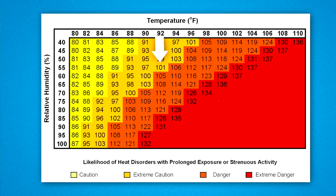The apparent temperature is the combined index of heat plus humidity — an index of the body's sensation of heat caused by temperature and humidity combined. As an example, if the air temperature is 96 degrees Fahrenheit and the relative humidity is 65%, the heat index, or how hot it really feels, is about 121 degrees Fahrenheit.